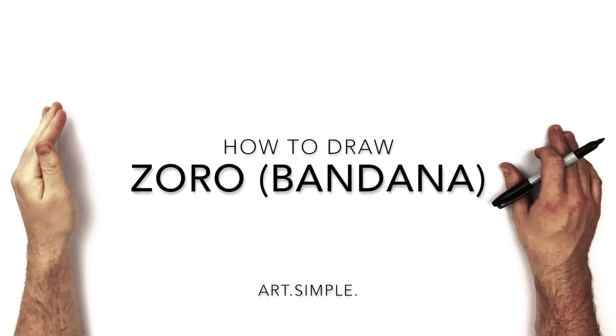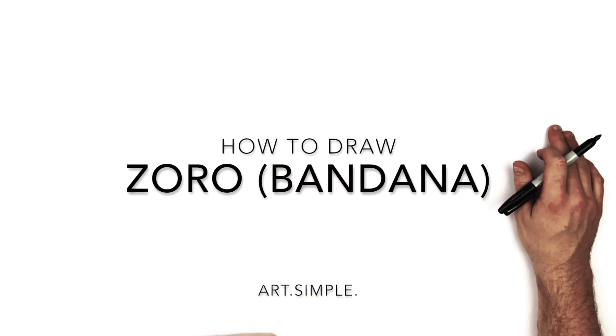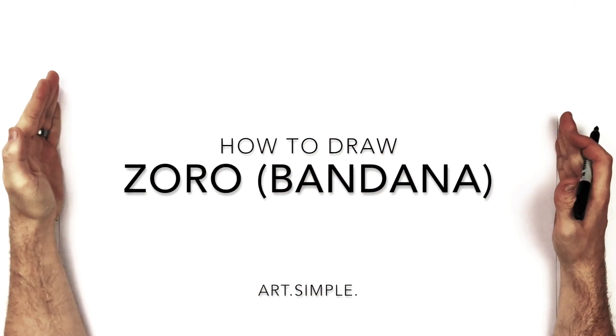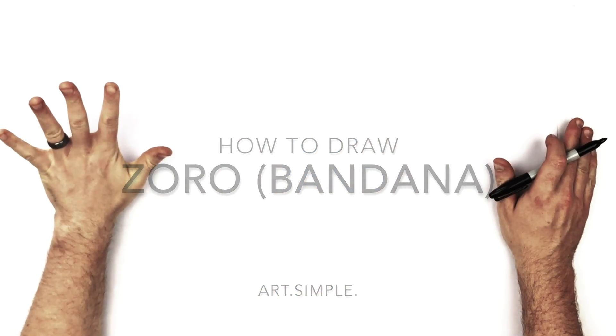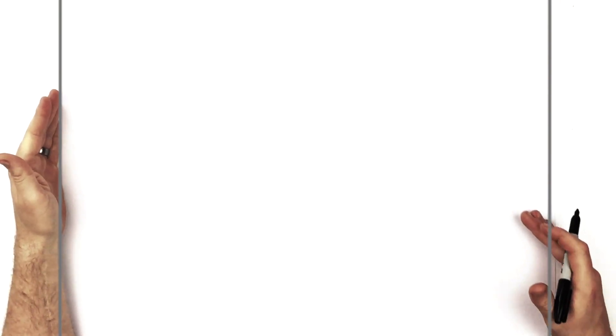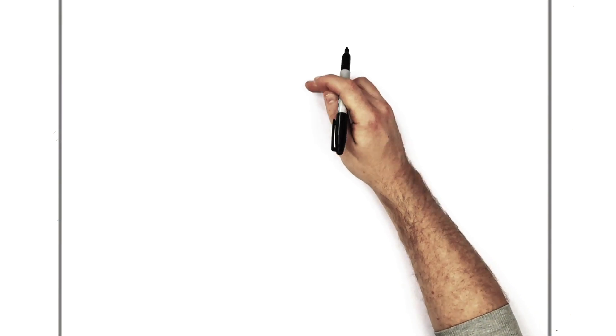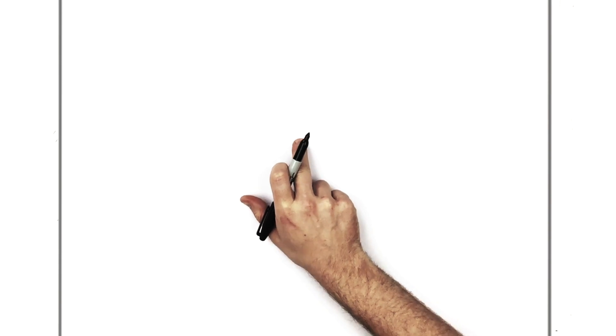So he's got the bandana and one sword in his mouth. I'm on a landscape orientation page as usual. Hit pause if I go too fast, slow down the video if I'm moving too fast when I move my hand. We'll start with his closed eye. So center point to my page is about here, just come up a little bit, over to the right.